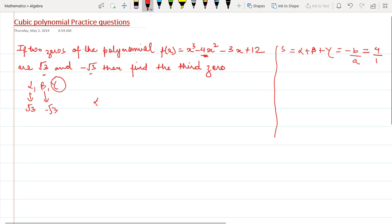So I will put down that alpha plus beta plus gamma equals 4. Alpha plus beta is √3 - √3 plus gamma equals 4, and this gets cancelled. So you get gamma equals 4, and this, my friends, is the solution.